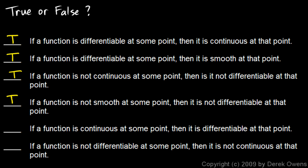Fifth: if a function is continuous at some point, then it is differentiable at that point. Well, if it's continuous it might be differentiable, but not necessarily, because it might not be smooth at that point — so that's false. And the last one: if a function is not differentiable at some point, then it is not continuous at that point. That's also false. It may fail to be differentiable for some other reason than not being continuous — for instance, it might have a cusp there. Understanding these concepts is what's important.